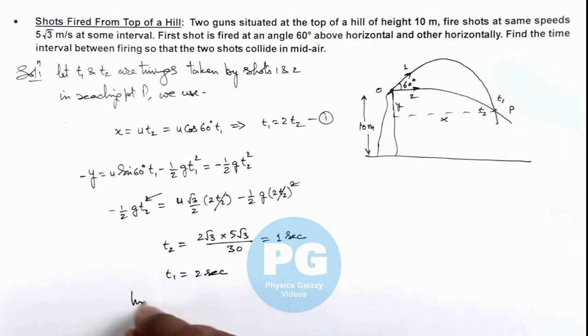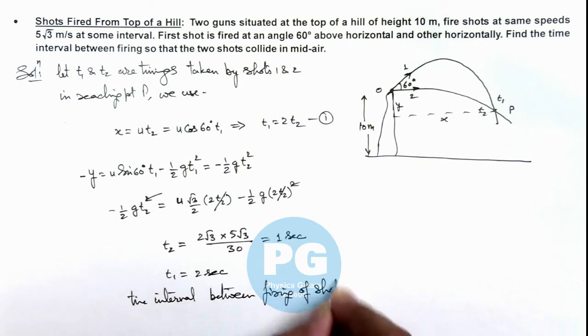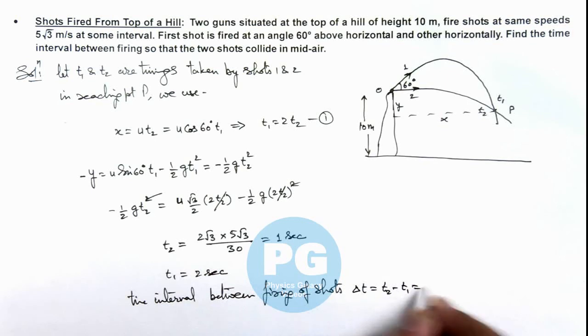If we calculate the time interval between firing of shots, this can be given as delta t is equal to t1 minus t2, that is equal to 2 minus 1, that is 1 second. That is the final result of this problem.